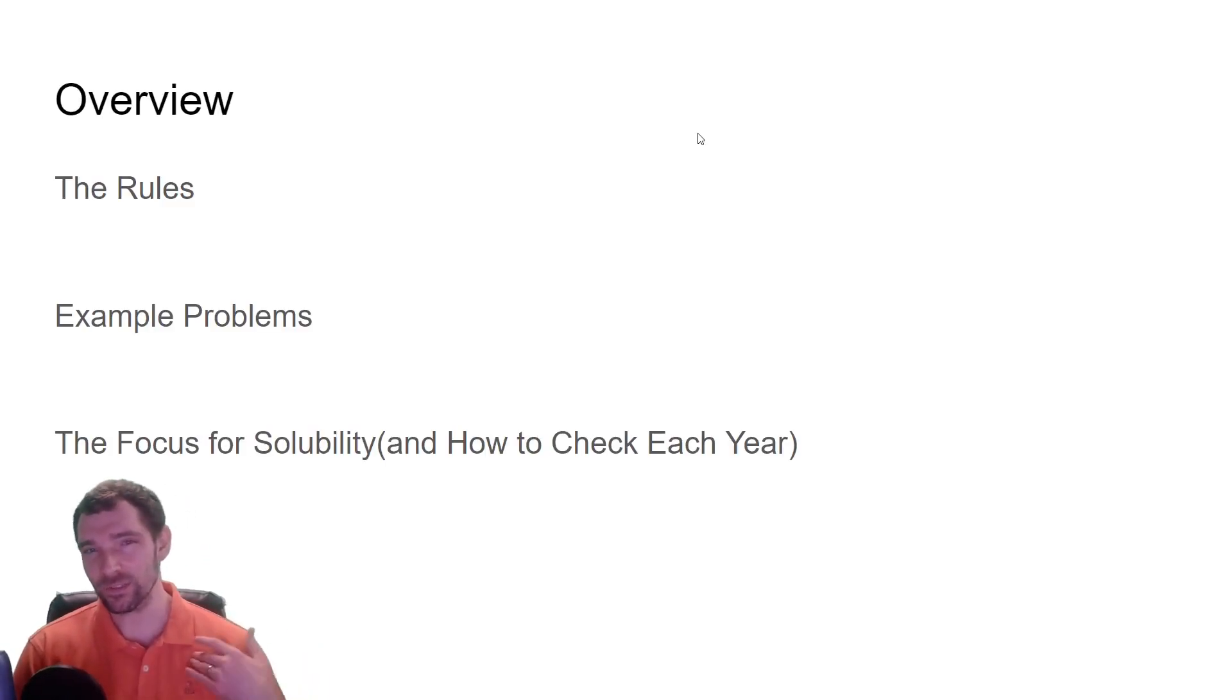When I took the test about 10 years ago, the rules were different than they currently are. They're a lot easier now. You only need to memorize four ions that are always soluble. We'll go over some example problems because it's not really about that memorization. Precipitation is relevant to a number of problems. We'll talk about the focus of solubility on the test and how to check this and how it's changed over time.